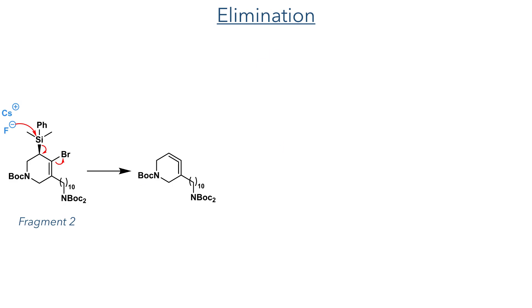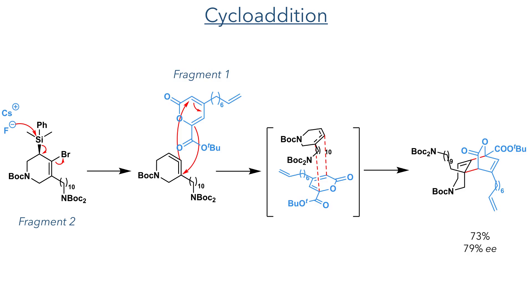With these two fragments now complete, they then turned to coupling them together. Fragment 2 was first reacted with cesium fluoride to form an aryne. Fluorine acts as a nucleophile to attack the silyl group, breaking the silicon-carbon bond, while the bromide on the adjacent carbon is eliminated to form the aryne. This aryne then took part in a cycloaddition with fragment 1, joining the two fragments, forming a new ring system and constructing the azadecalin core.